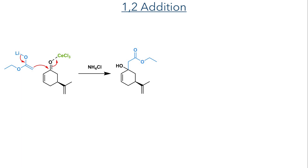The synthesis of fragment 2 started with S-nor-carvone. This was first reacted with cerium trichloride and a lithium enolate. The cerium coordinates to the oxygen and increases the selectivity for nucleophilic attack at the carbonyl centre in preference to conjugate addition at the beta position.